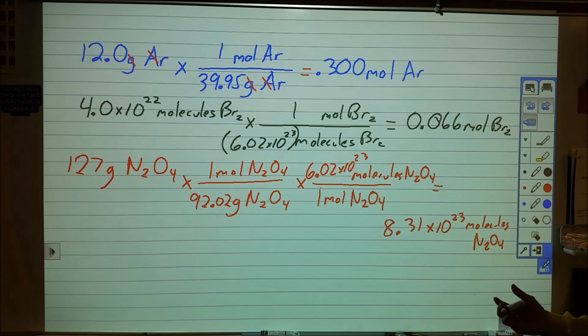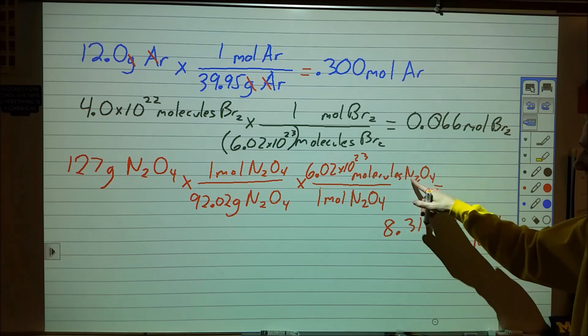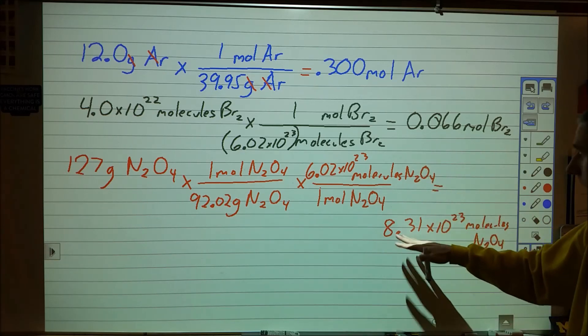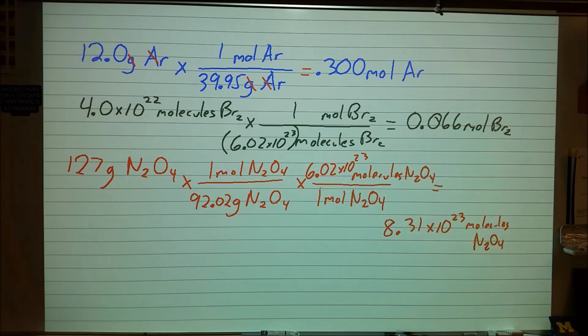Now, hypothetically, let's say they asked the question, they said, how many atoms are there? Well, at each one molecule, we have two nitrogen atoms and four oxygen atoms. We can multiply that by 6, which would give us, you know, 4.9, 5.0 times 10 to the 24th, somewhere in that range.